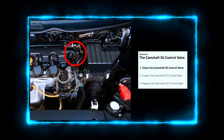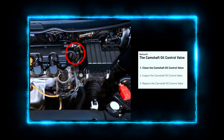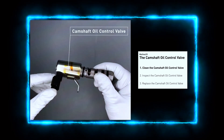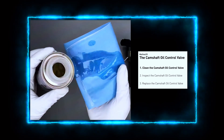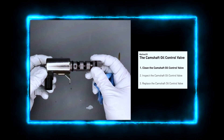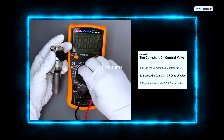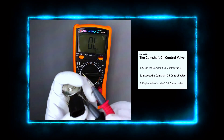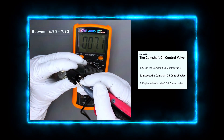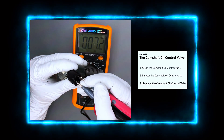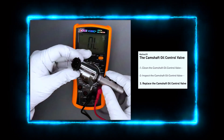Locate the camshaft oil control valve — depending on your vehicle, it's usually mounted on the cylinder head near the camshaft, bolted to the engine block with an electrical connector attached. Clean the oil control valve using brake cleaner or electrical contact cleaner spray. Clean the valve thoroughly to remove any dirt or sludge buildup, including the valve's filter and any passages. Wipe it down with a clean cloth and let it air dry for a few minutes. To test the valve before reinstallation, use a multimeter to check the resistance across the valve's electrical terminals — it should be within the manufacturer's specifications, usually between 6 to 12 ohms. If the reading is off, replace the valve. Install the new camshaft oil control valve in the same spot, securing the bolts and reconnecting the harness.